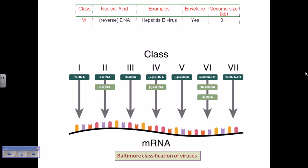In summary, the Baltimore classification has 7 classes of viruses. To understand it, you need to know the central dogma of biology — how RNA is produced from DNA and how proteins are produced from RNA. Whether a virus has positive or negative strand RNA, the final goal is to produce mRNA. Once mRNA is produced, proteins can be made. Classes 2, 4, and 6 require one or two intermediate steps to produce mRNA. That's the Baltimore classification of viruses.